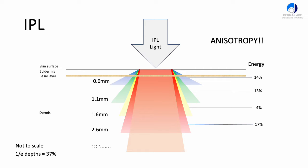Finally, we have the infrared energy, which will easily penetrate down to 10 millimeters or greater, and this constitutes about 52% — more than half of all the IPL energy is in the near-infrared section between 700 and 1200 nanometers. We can see that the infrared and the red have the highest values of anisotropy, so they penetrate deeper into the skin than blue, green, and yellow light. Those lower wavelengths will always spread out wider compared to red and infrared.